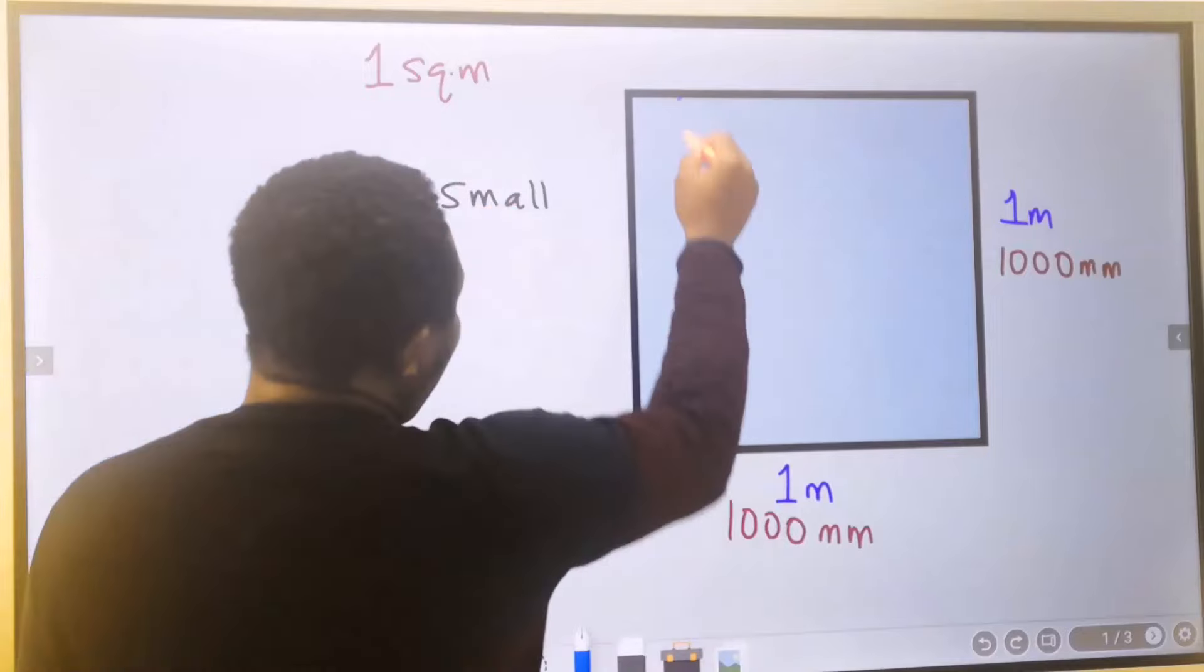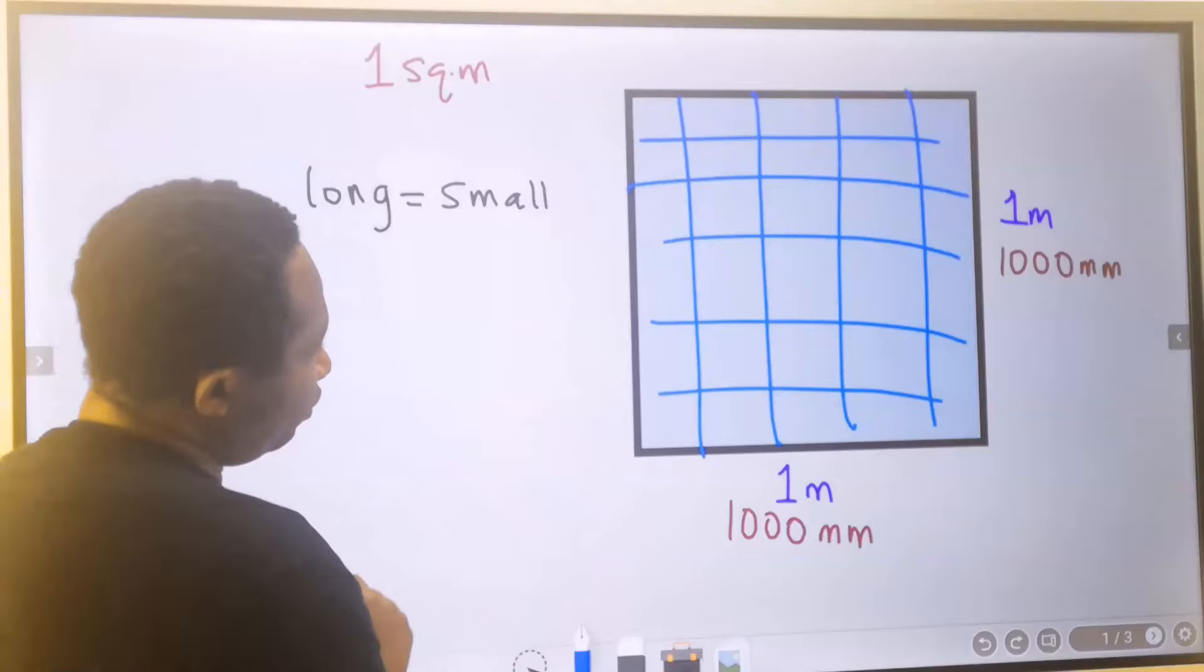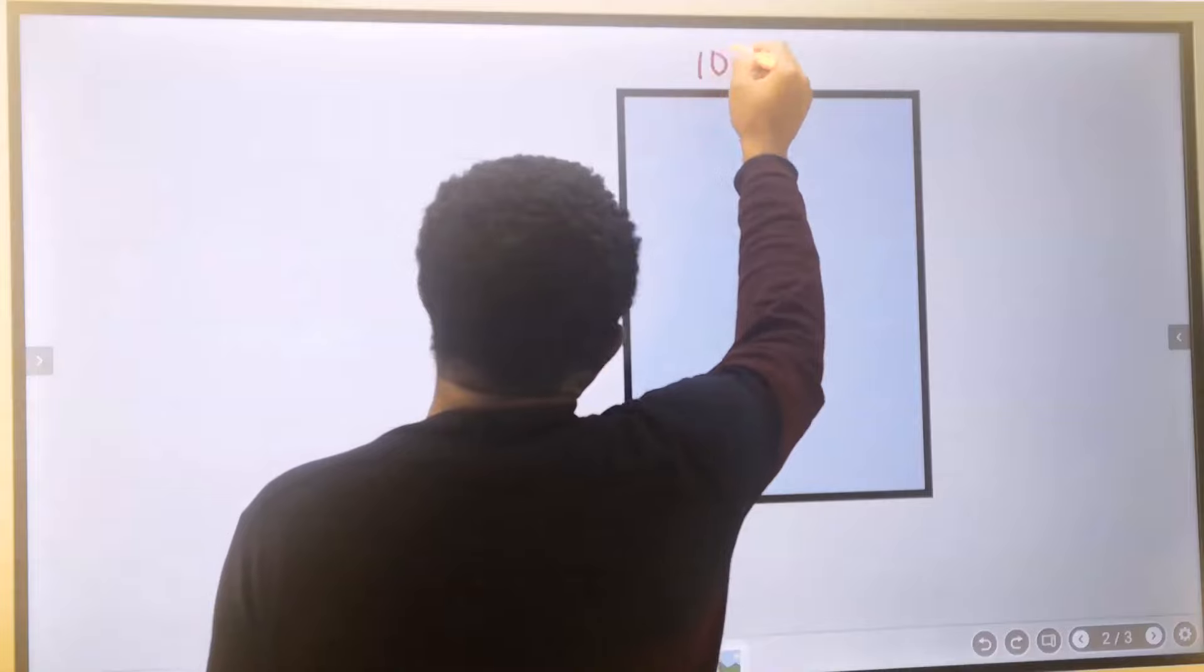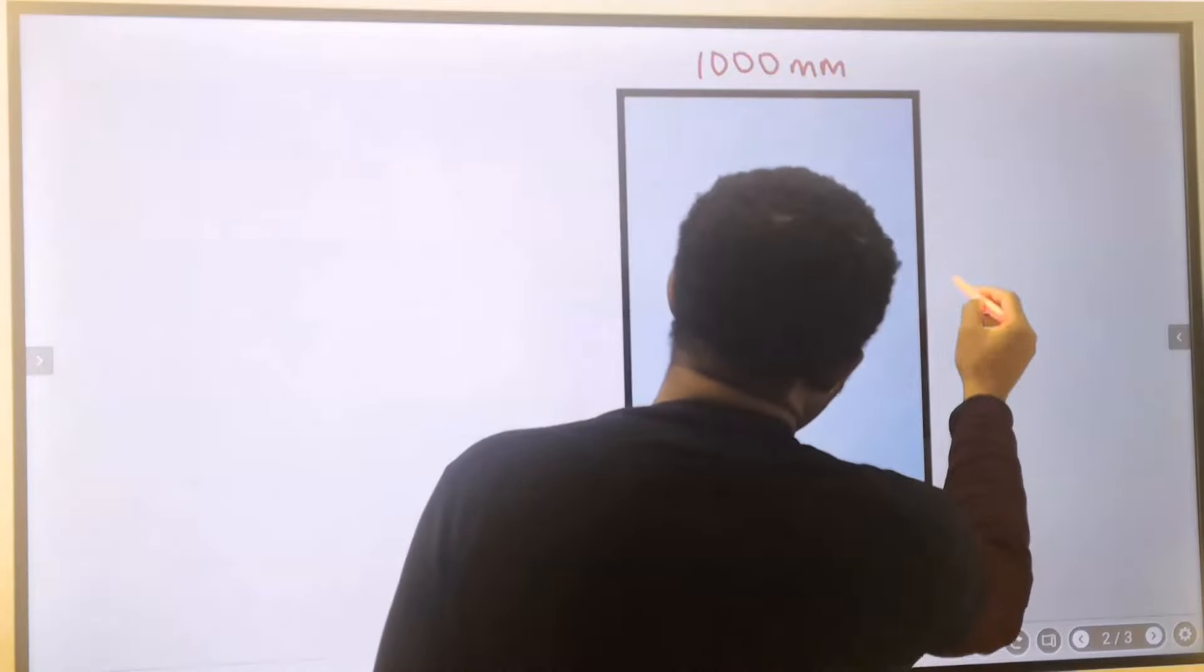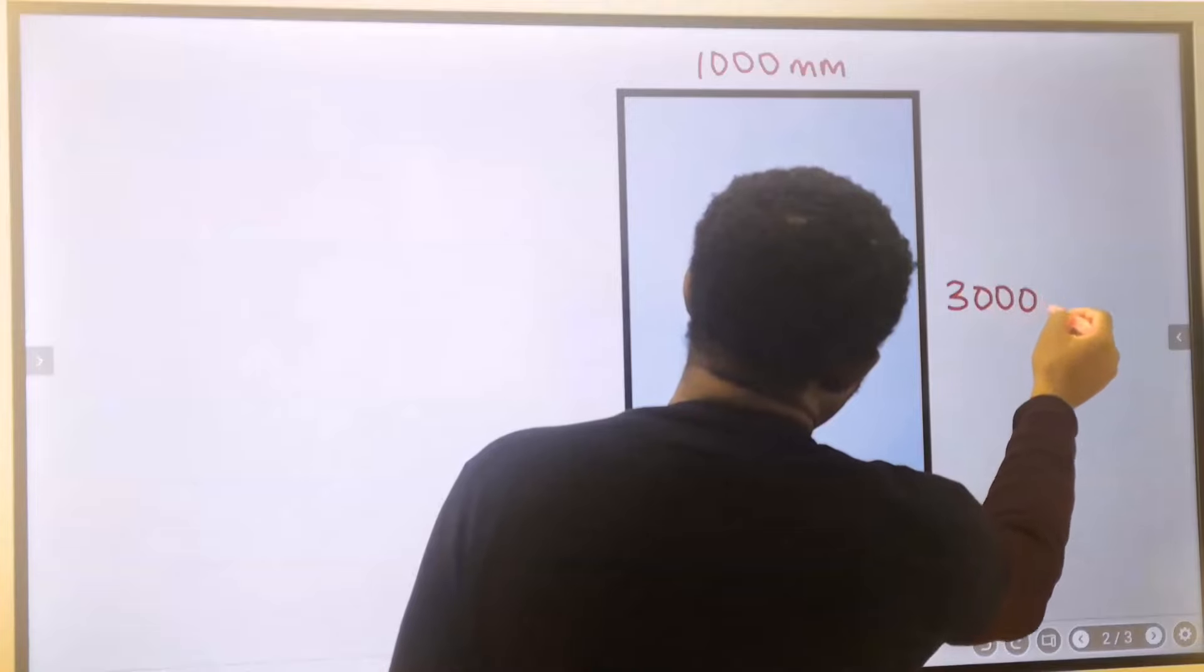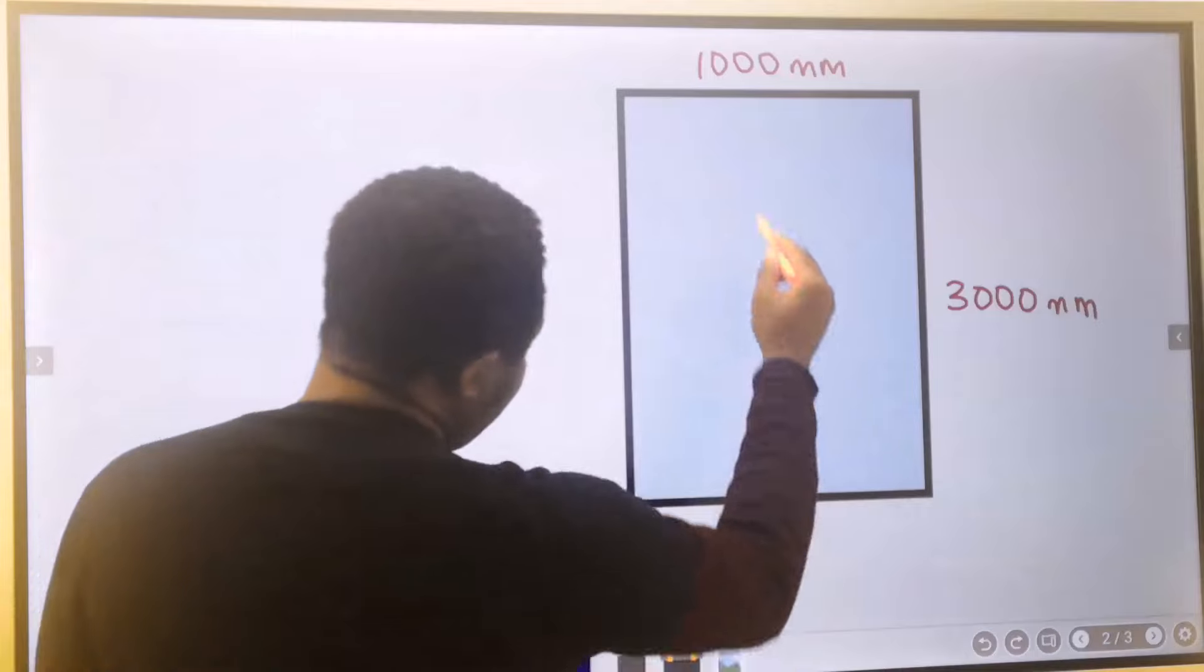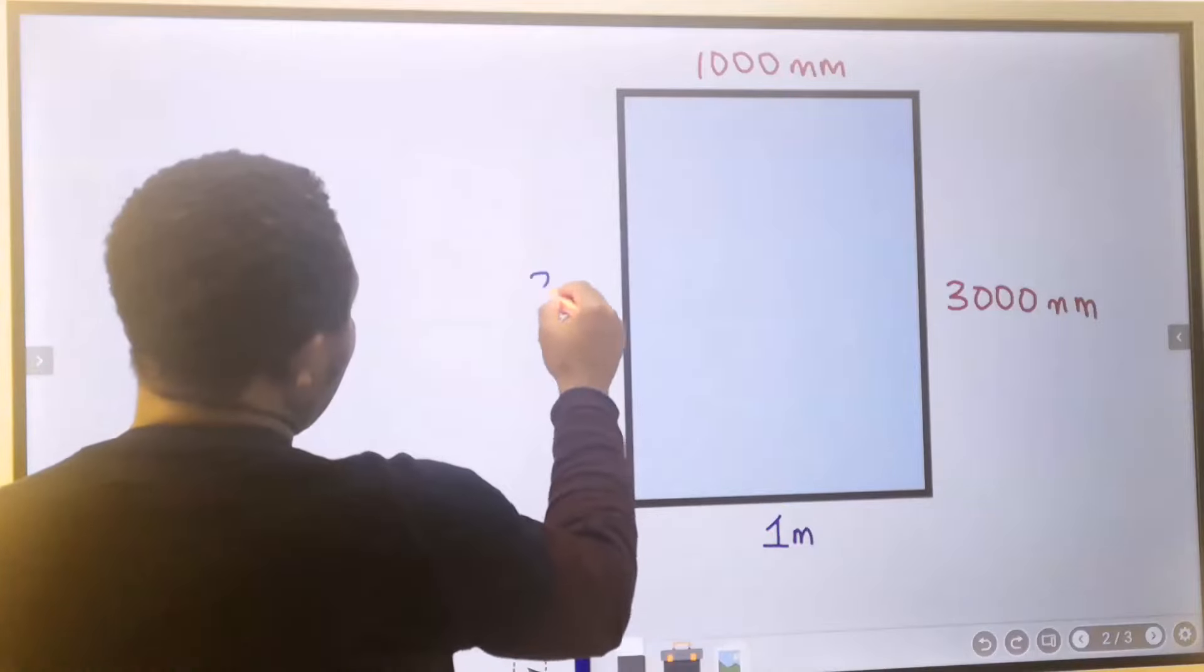That means we are free to design this as a column footing. Also, if we have here as a thousand millimeters and this length is three thousand millimeters, that is, this is one meter and this is three meters.